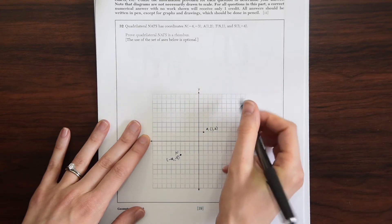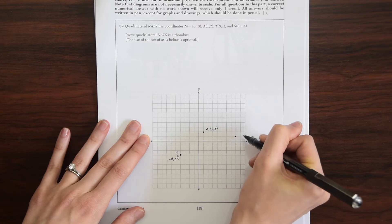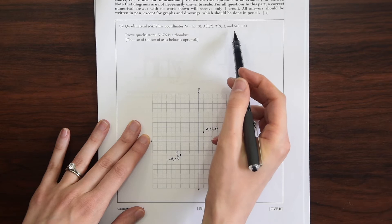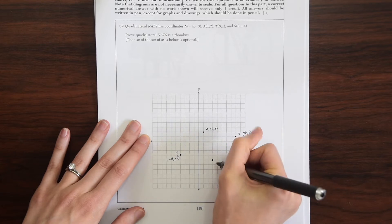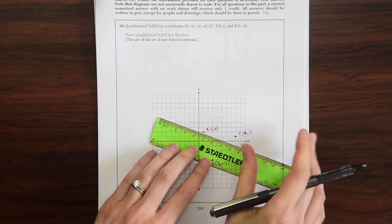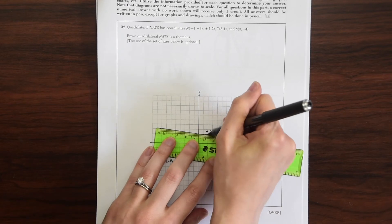T is (8,1). And then lastly we have (3,-4) for S. So 3, 1, 2, 3, 4. And this is S(3,-4). So now we could just connect all our dots, all our points and see if this looks like a rhombus.